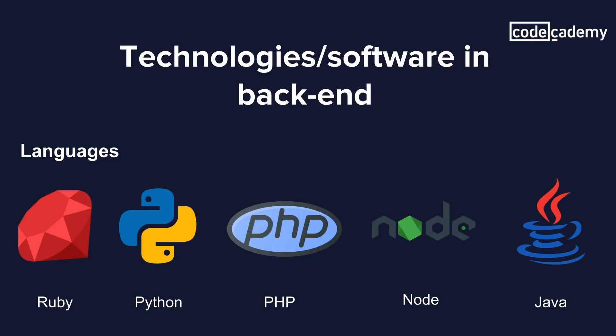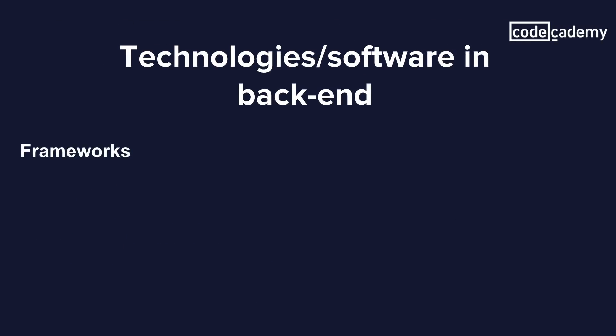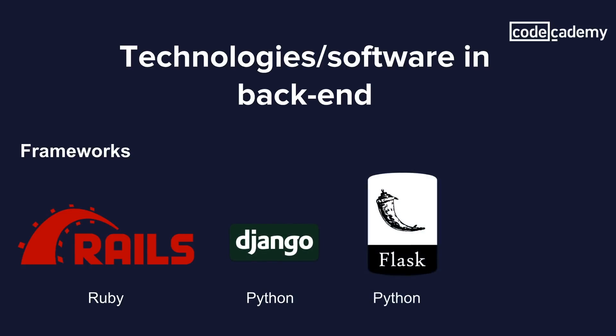Now let's look into frameworks. Frameworks are basically libraries of server-side programming languages that construct the backend structure of a site. They make it easier to write, maintain, and scale web applications, and provide tools and libraries that simplify common web development tasks — like routing URLs to appropriate handlers, interacting with databases, supporting sessions and user authorization, formatting output, and improving security against web attacks. Some examples are Ruby on Rails, Django and Flask for Python, and Express for Node.